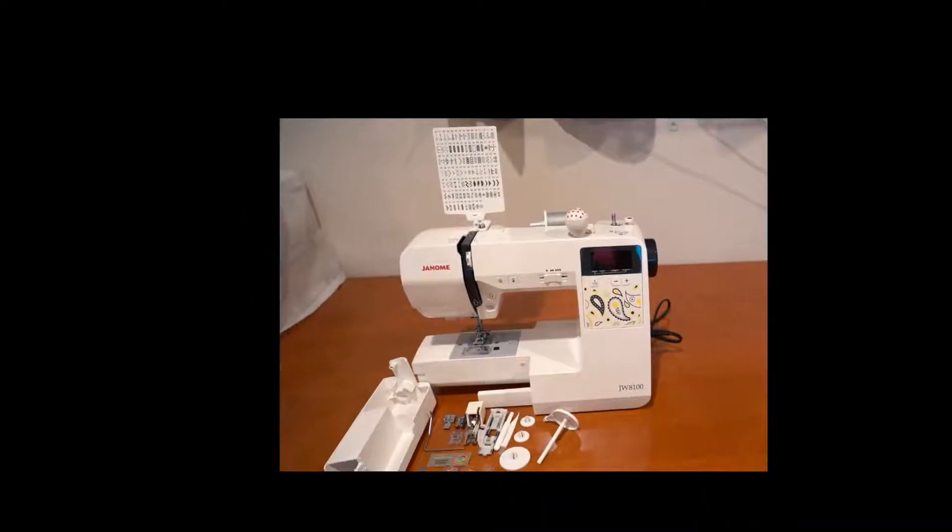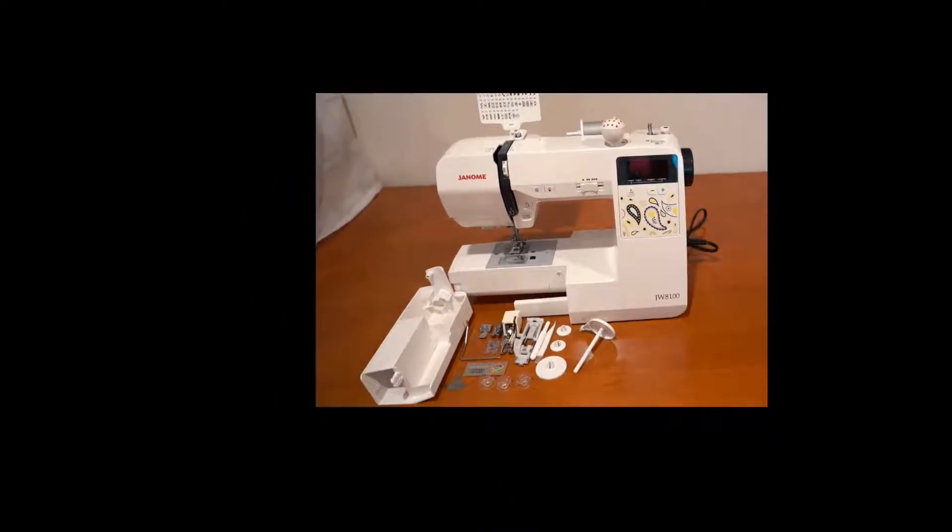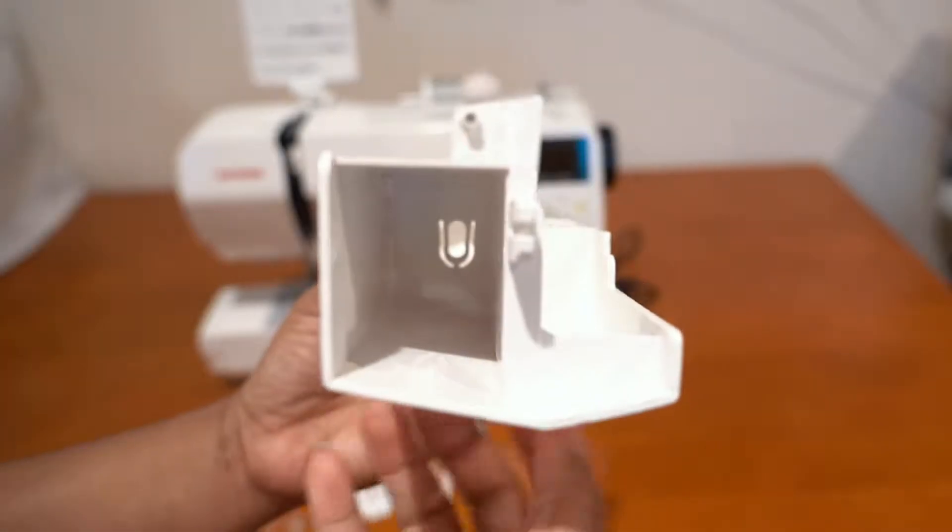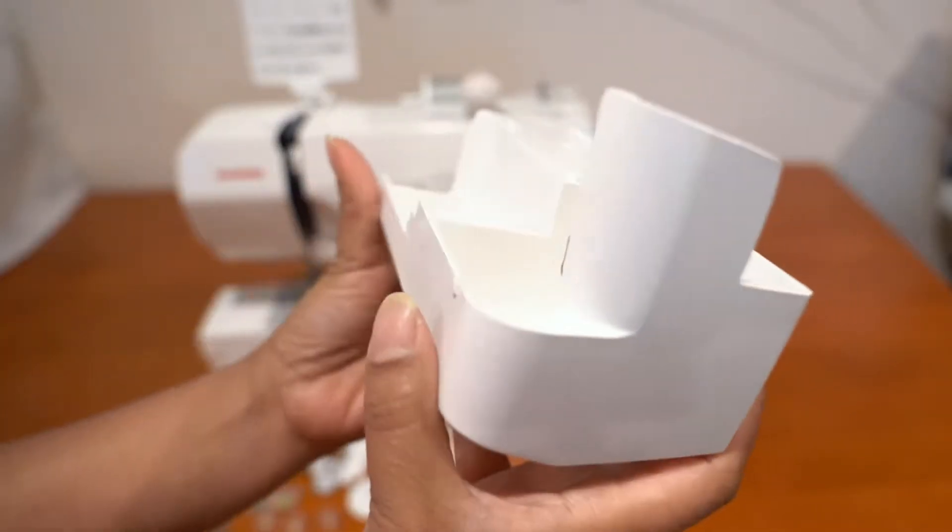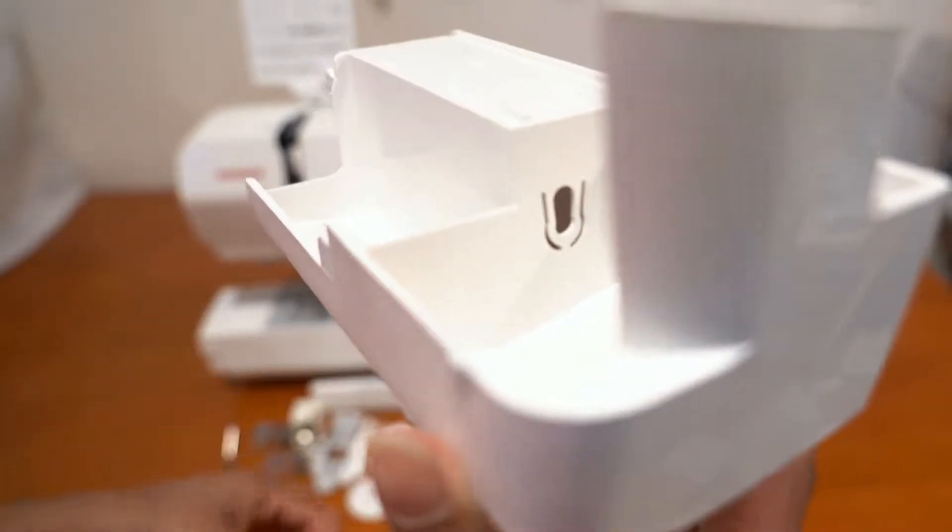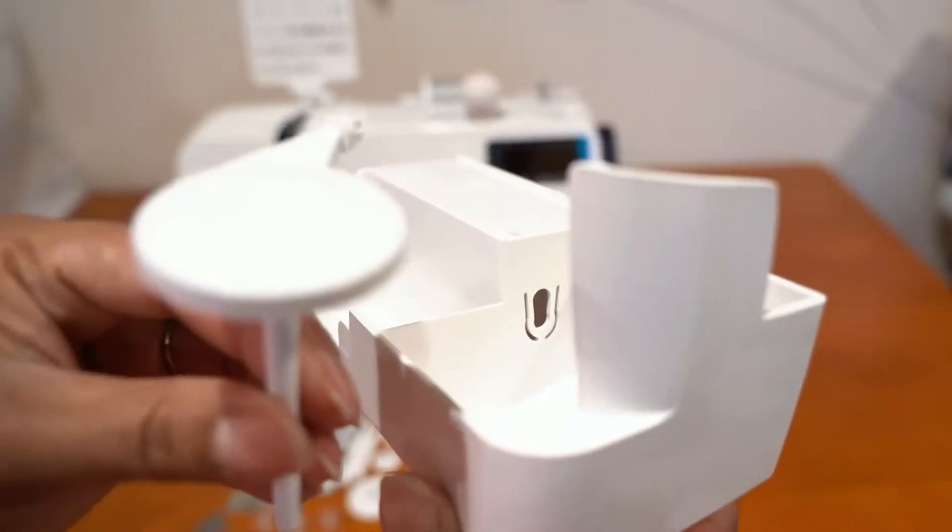Hello viewers, welcome to my channel. Today's video is about the Janome JW AD100 accessory storage compartment. Here's the accessory storage. This accessory storage has two compartments: one will hold all the accessories, and this compartment here holds the extra spool pin that comes with the machine.